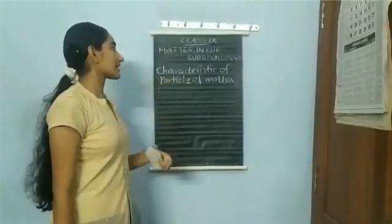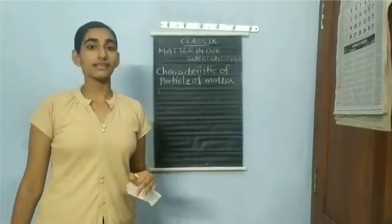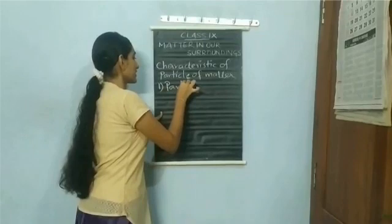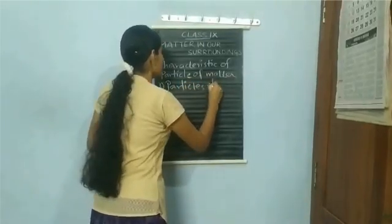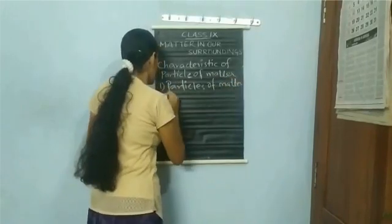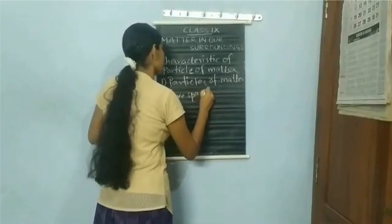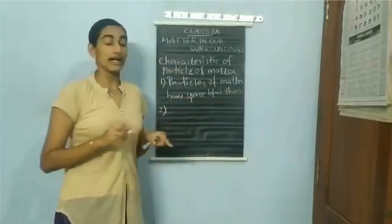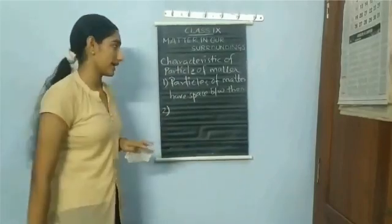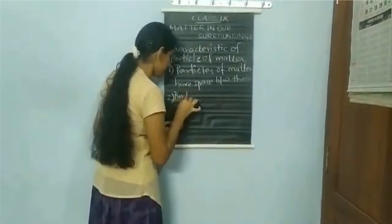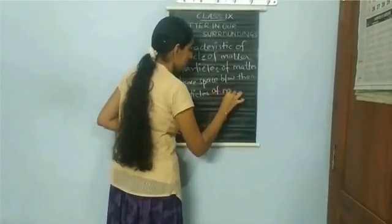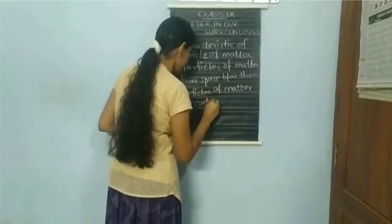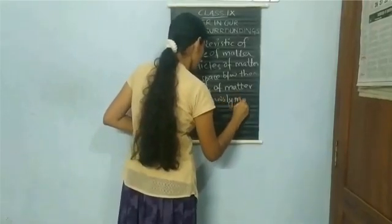The next topic is the characteristics of the particles of matter. There are three characteristics. The first is that particles of matter have space between them. The second characteristic is that the particles of matter are continuously moving.